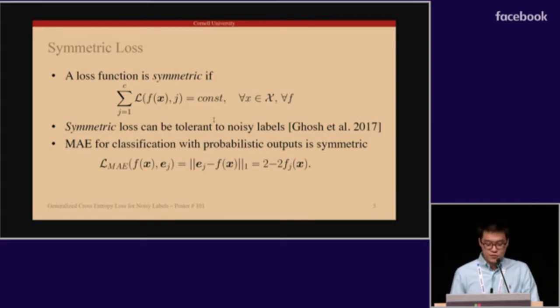Mean absolute error was thus proposed for training neural networks with probabilistic output in the presence of label noise because it's a symmetric loss function. On the contrary, the widely used cross-entropy loss is not symmetric.